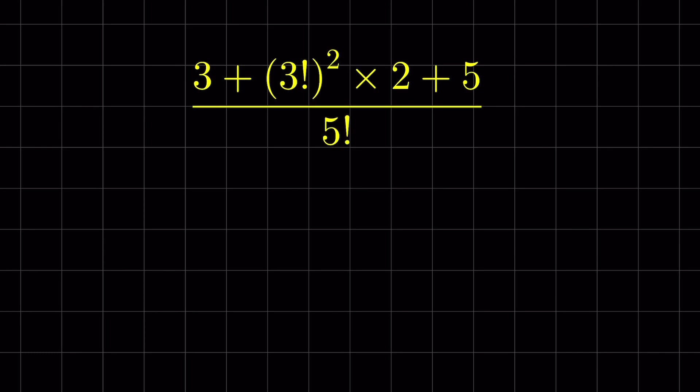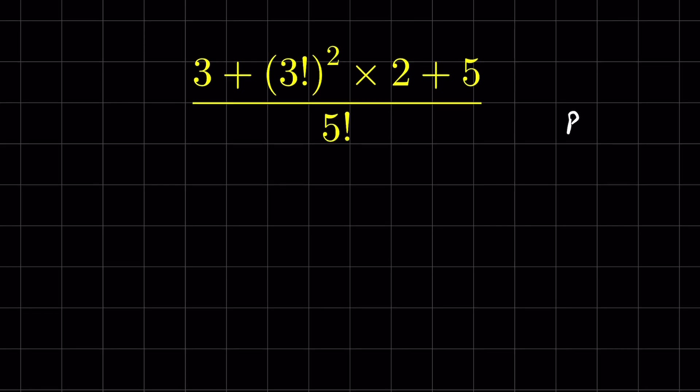3 plus 3 factorial raised to the power of 2 times 2 plus 5 upon 5 factorial. Now how to solve this? As per the order of operations, we first solve parenthesis, then exponent, then multiplication and division, then addition and subtraction.